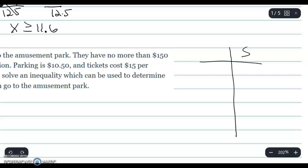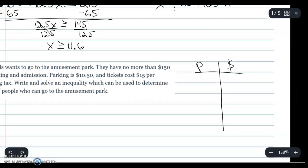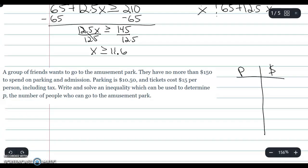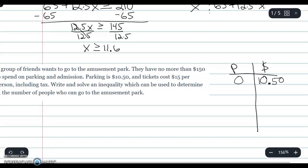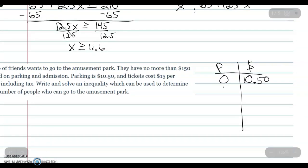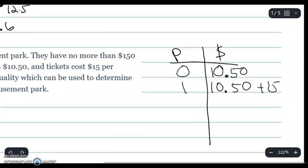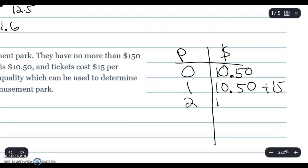On one side I got the total amount of money and on the left side here I got how many people. So with zero tickets or zero people going, if you just had the parking you're looking at $10.50. With one person going, $10.50 plus $15. With two people, $10.50 plus $15 times 2, and you can kind of guess how it's going here.